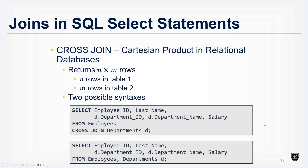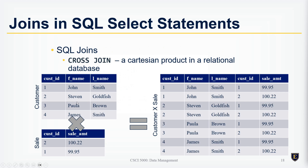What we typically want is to apply a condition. If this is the customer_id pointing back to the customer table, we only want matches. Customer ID 1 means John Smith had a sale of $99.95, and customer ID 2 means Stephen Goldfish had a sale of $122. This is what we accomplish with an inner join.